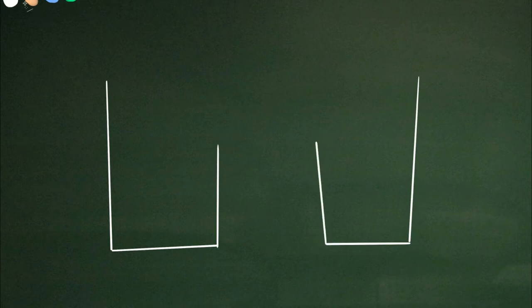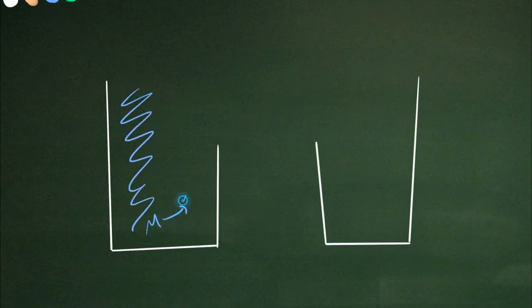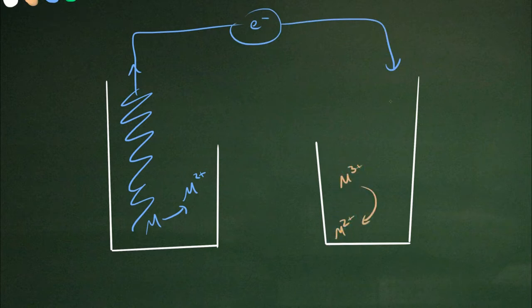So how does an all-iron battery work? It works like any battery. You need an anode side and a cathode side. At the anode side, metal is going to dissolve into an oxidized form, Metal 2+. At the cathode side, you've got Metal 3+, that's going to be reduced to Metal 2+.